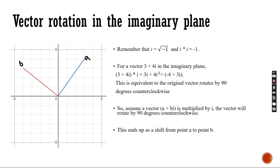So multiplying something by i equals rotating the original vector by 90 degrees counterclockwise. So assume a vector A plus BI is multiplied by i, the vector will always be 90 degrees counterclockwise. This ends up as a shift from point A to point B.